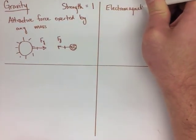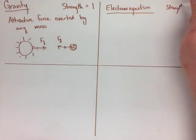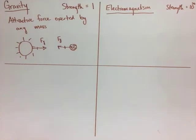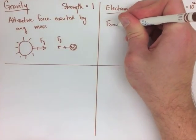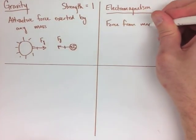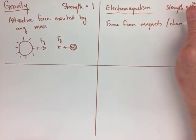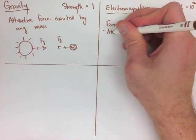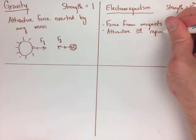The next force we're going to look at is electromagnetism. It is a relative strength of 10 to the exponent 36. Now electromagnetism is the force from magnets or from charges. Now this can be either an attractive or a repulsion.